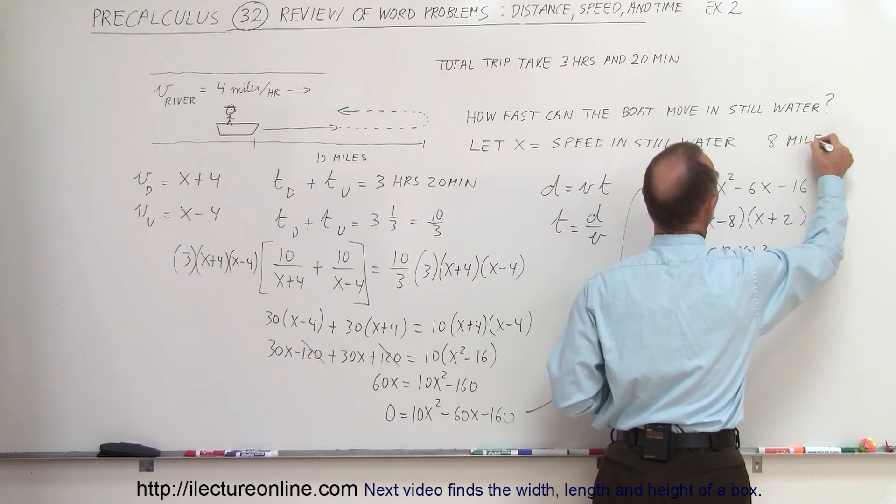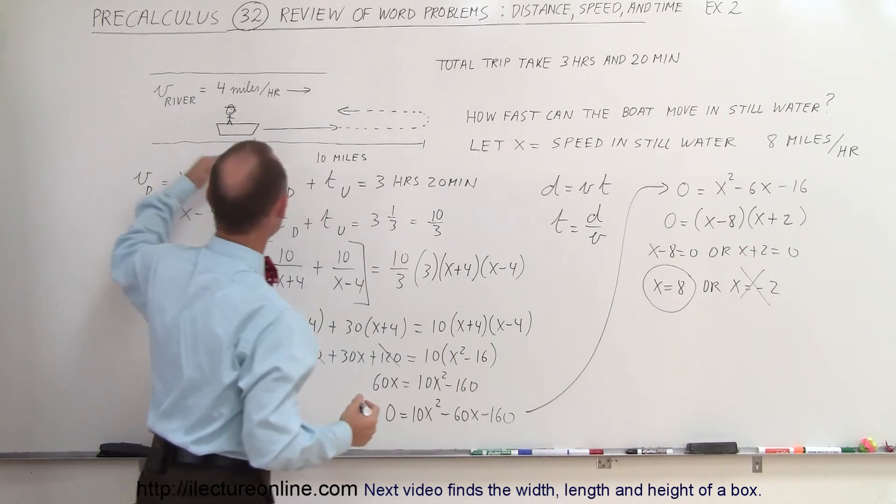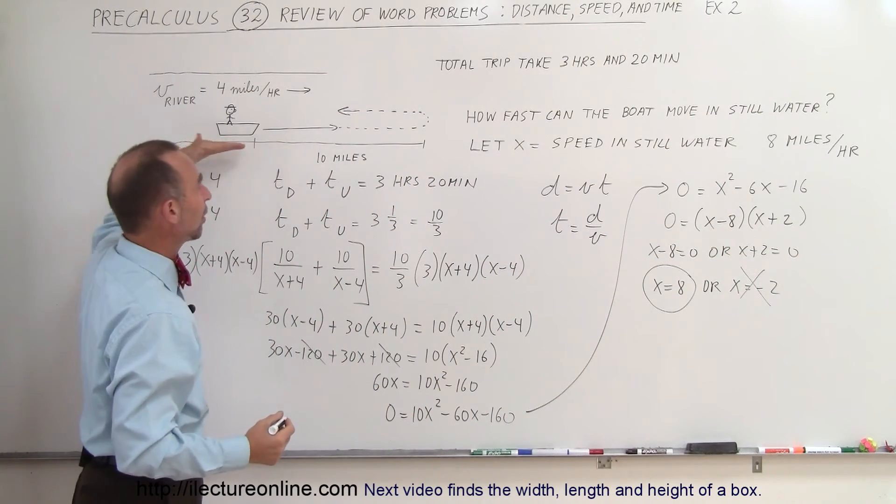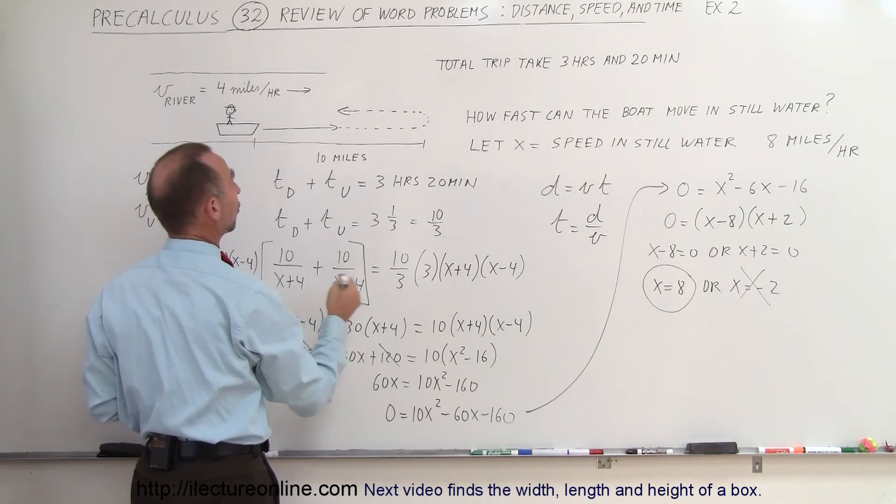8 miles per hour, which means that when it travels downstream, it's 8 plus 4, or 12 miles per hour. When it travels upstream, it's 8 minus 4, or 4 miles per hour.